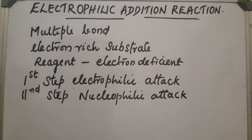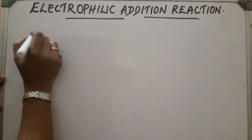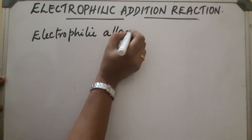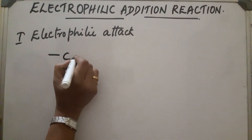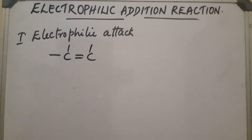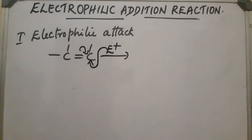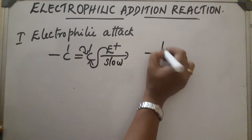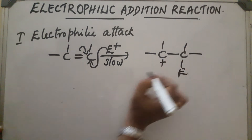First step: electrophilic attack. The compound contains a double bond or triple bond. This pi bond is broken, and an electrophile will come and attack. This is a slow process. The electrophile attacks and the product gets a positive charge.